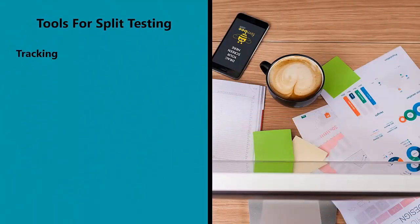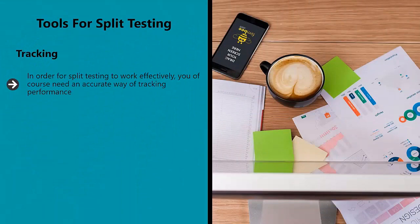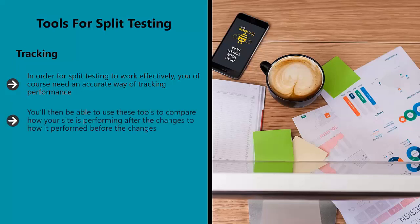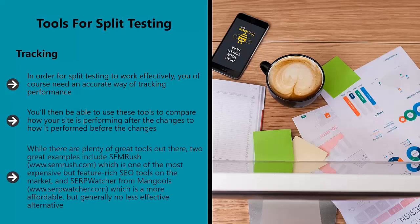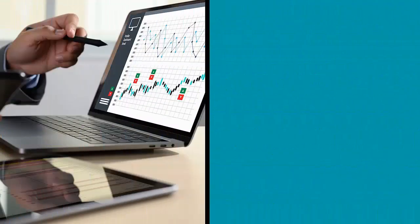Tools for split testing — tracking. In order for split testing to work effectively, you of course need an accurate way of tracking performance. To that end, it's a good idea to invest in some high-quality keyword tracking software that can show you your position in the SERPs for particular terms. You'll then be able to use these tools to compare how your site is performing after the changes to how it performed before the changes. Two great examples include SEMrush (www.semrush.com), which is one of the most expensive but feature-rich SEO tools on the market, and SERP Watcher from Mangools (www.serpwatcher.com), which is a more affordable but generally no less effective alternative.